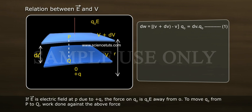If E bar is electric field at P due to plus Q, the force on Q naught is Q naught E away from O. To move Q naught from P to Q, work done against the above force.